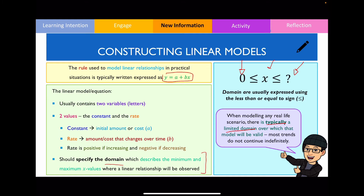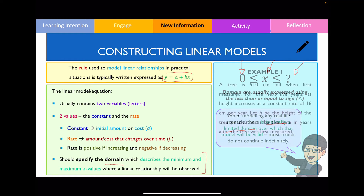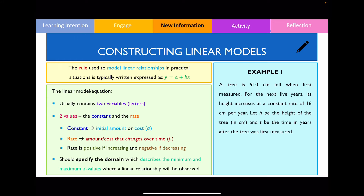When writing the domain, you use the letter x or t depending on what the question gives you. The lowest value is generally zero because it starts at zero minutes or hours, and you specify the maximum value up to which you observe the linear relationship. In this example, a tree grows at a constant rate, and we want to construct a linear model. The height is dependent on time, so I write h equals something. The initial value from reading the question is 910.